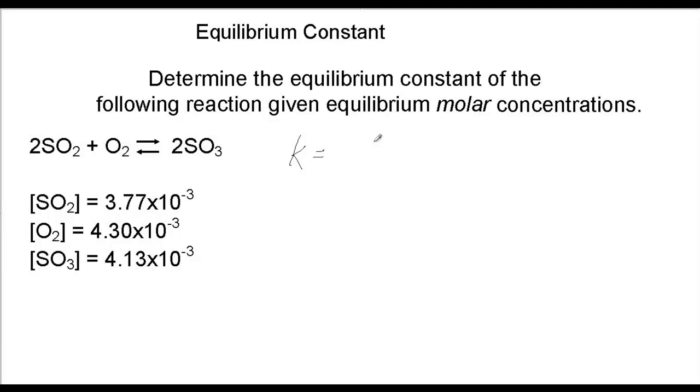So in the numerator, it's SO3 squared, divided by the molar concentration of SO2 squared times the molar concentration of oxygen gas.